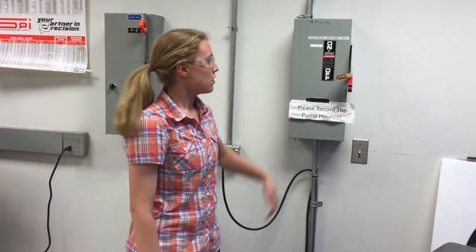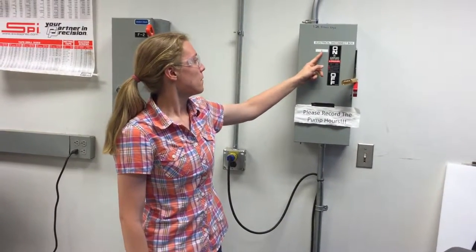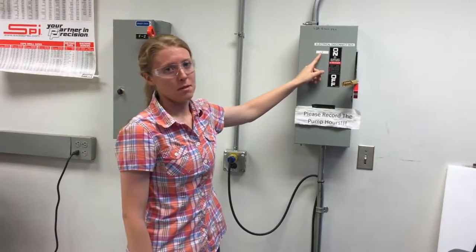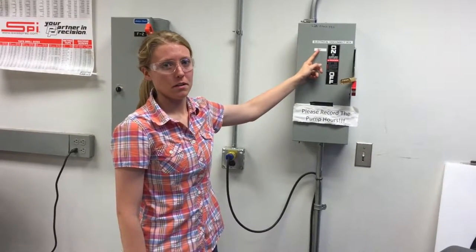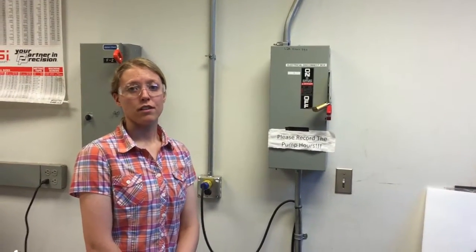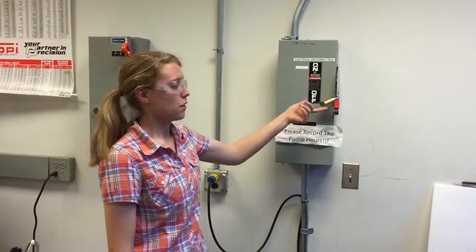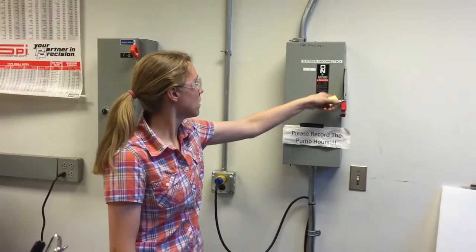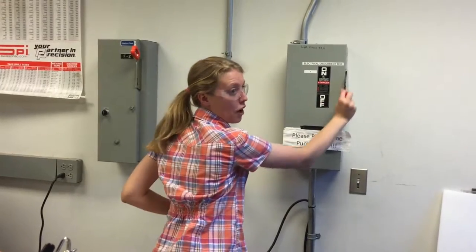Before you begin, it is important to turn on the water jet in the correct order. Each step is labeled with a number. You must follow these numbers or else it can damage the equipment. When starting up the water jet, the first thing you must do is turn on the breaker. So remove the lock and switch it on.